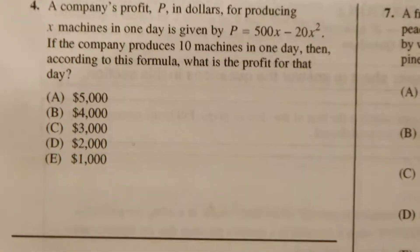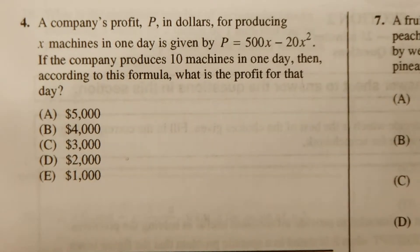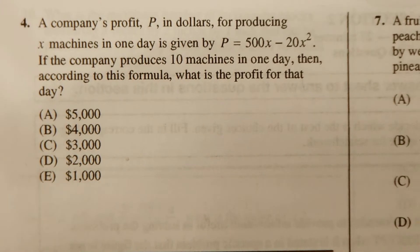Still in section 2 of the SAT practice test, number 4. A company's profit P in dollars for producing x machines in one day is given by P equals 500x minus 20x squared. If the company produces 10 machines in one day, then according to this formula, what is the profit for that day?